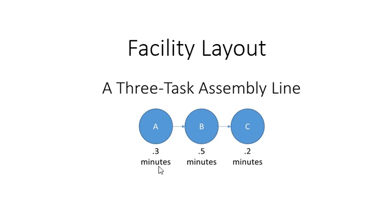Let's assume that we have an assembly line where we have three tasks that need to get accomplished. Task A takes 0.3 minutes. Task B takes half of a minute. Task C takes 0.2 minutes. What we have is one person at station A doing their work, a person at station B doing their work, and a person at station C doing their work.